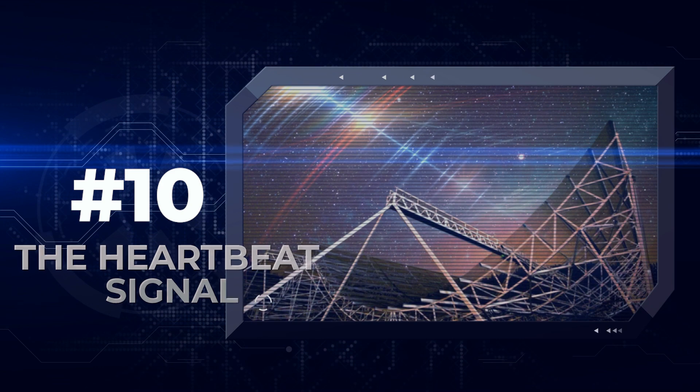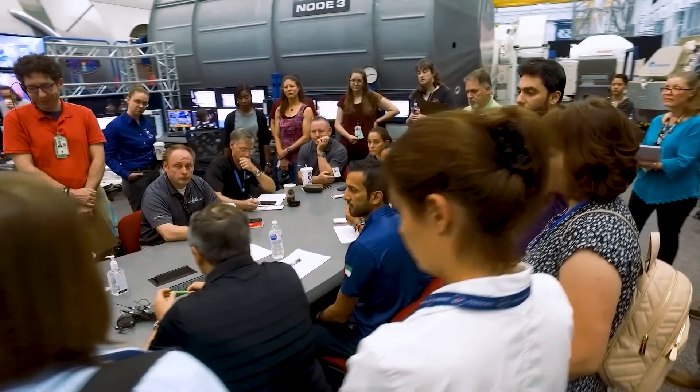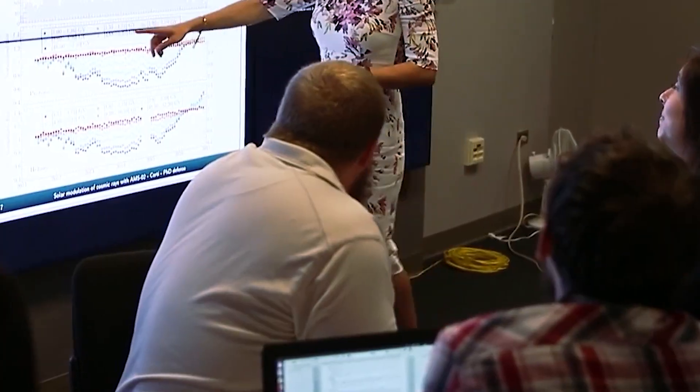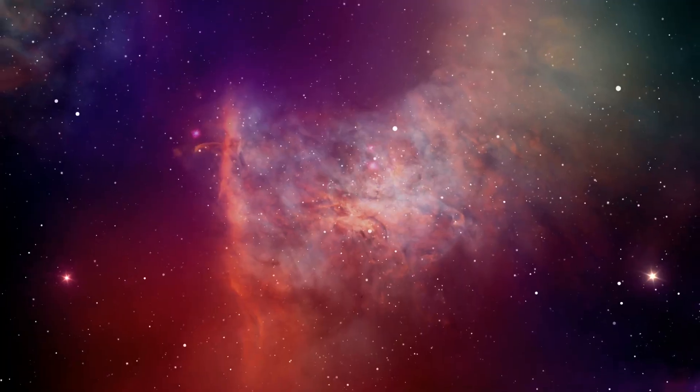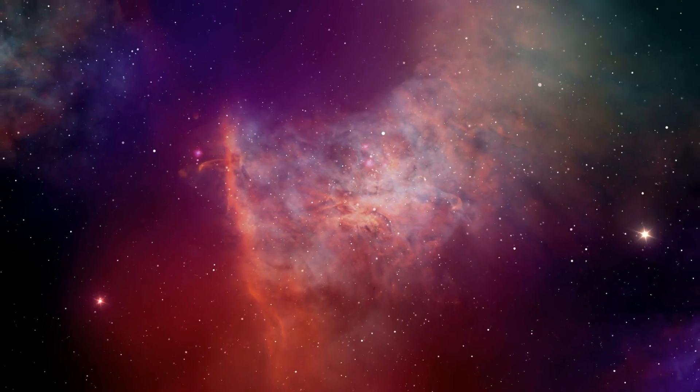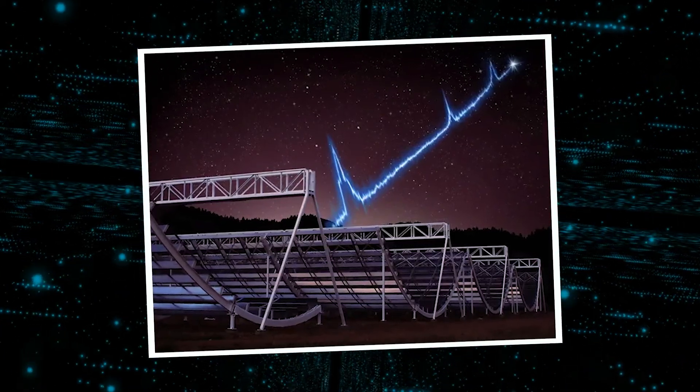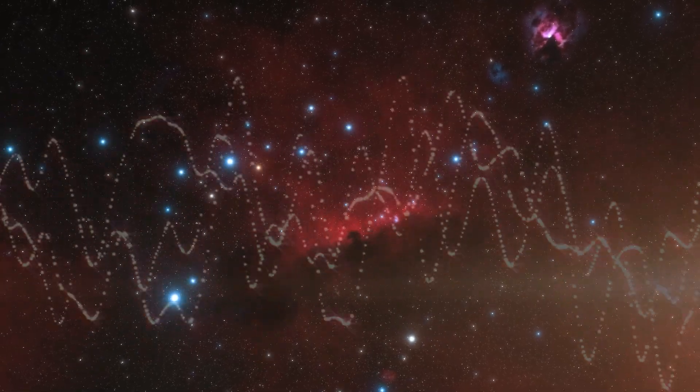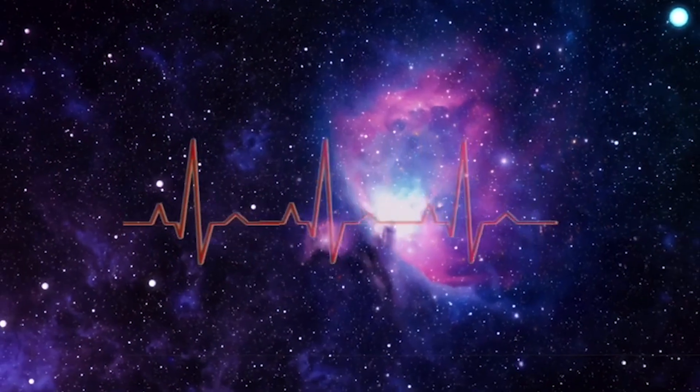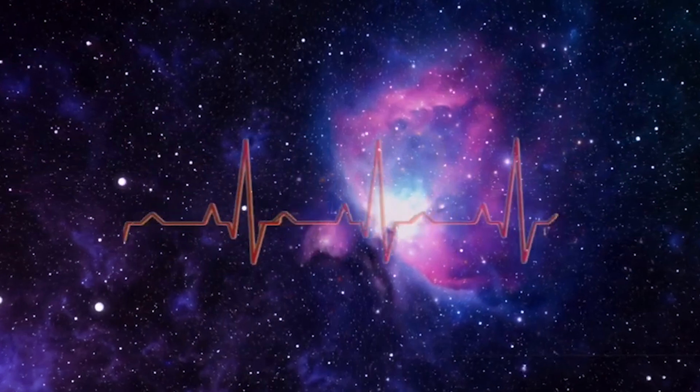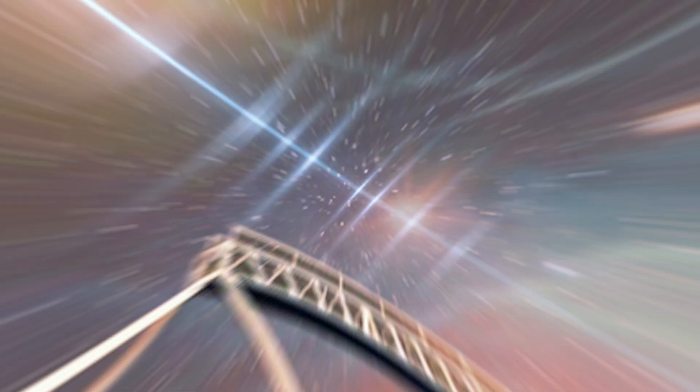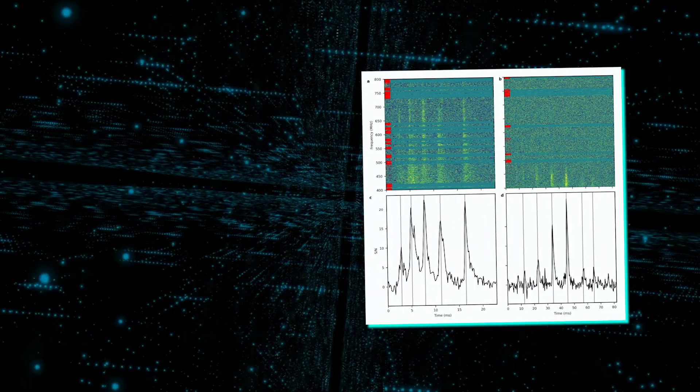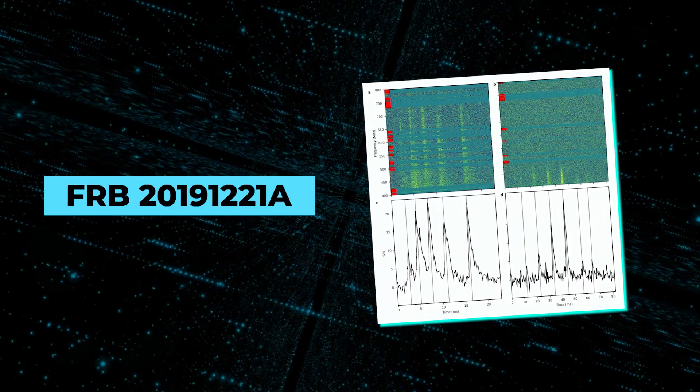Number 10. The heartbeat signal. The scientific community was taken aback in 2020 when astronomers unexpectedly discovered a captivating phenomenon within the vastness of space. They came across a mysterious radio signal that emitted rhythmic pulsations resembling a beating heart. This fast radio burst, FRB, with the designation FRB 2019-1221A, originated from an unknown source.